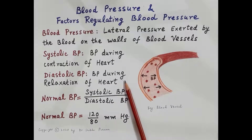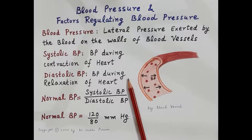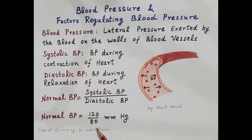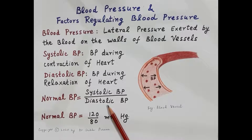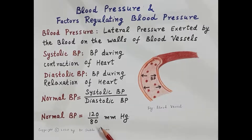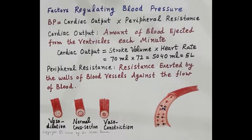The second type is diastolic blood pressure. During complete cardiac diastole, both the atria and ventricles relax, so the blood pressure is comparatively less in the arterial system. This is called diastolic blood pressure, and it is about 80 mm of mercury in a normal adult. Normal blood pressure is defined as systolic over diastolic, so the normal blood pressure in a healthy adult is about 120/80 mm of mercury.